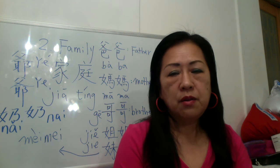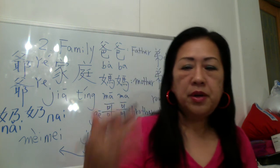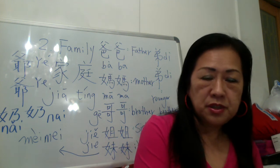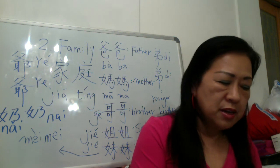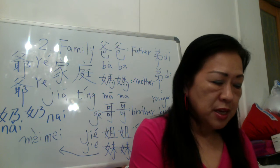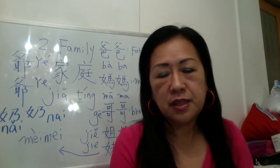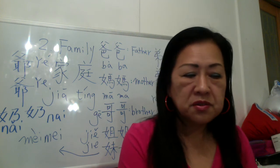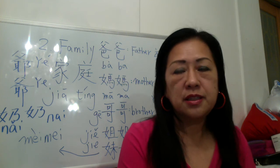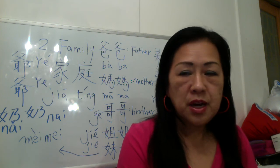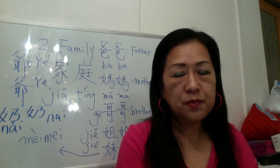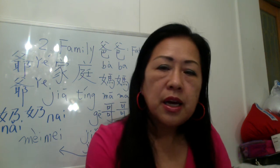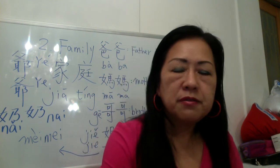王鹏 and 高文中 are in front of the picture. 王鹏 asks: that's your photo — your father, your mother. Who is the girl? Oh, she's my sister. How about that boy — is he your brother? No, he's my eldest brother's son. Your eldest brother has a daughter? No, he doesn't have a daughter.